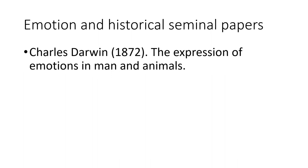Now let's look at some of the most influential emotion theories developed over the last 150 years — the types of emotion theories you need to know as a psychologist. Charles Darwin published The Origin of Species in 1859, but lesser known is his book The Expression of Emotions in Man and Animals, published as his third book in 1872. In this book, Darwin proposed three main principles.